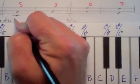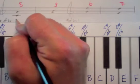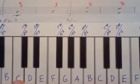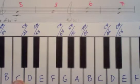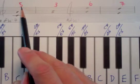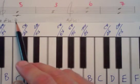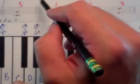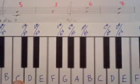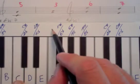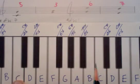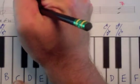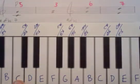So C to G has seven half steps. If we go to the chart, an interval with a generic interval of a fifth and seven half steps — the vertical column, interval size, is a fifth. If you come up to seven half steps and go across, where those two lines meet, this is a perfect fifth, capital P5.